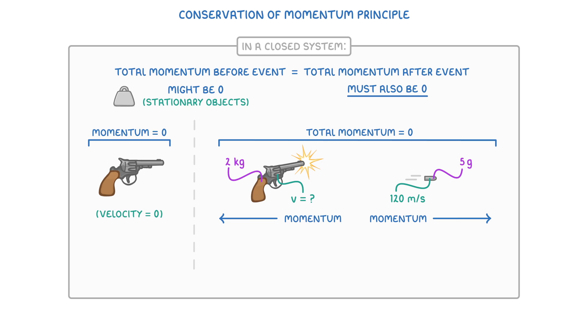The first thing we want to do is find the bullet's momentum using this bottom equation. So we do 0.005, which is its mass in kilos, times its velocity of 120, which will give us a momentum of 0.6 kg m per second.